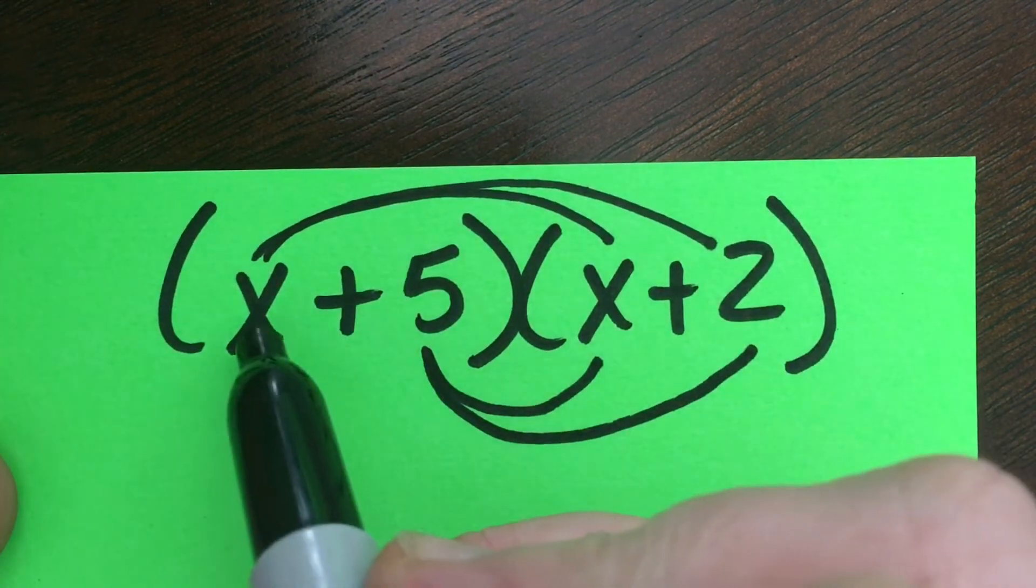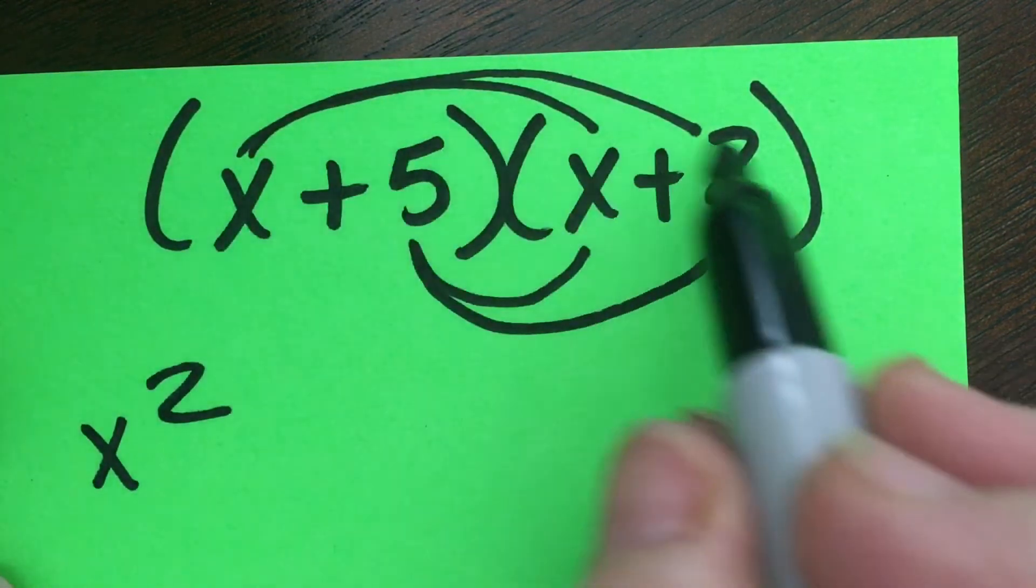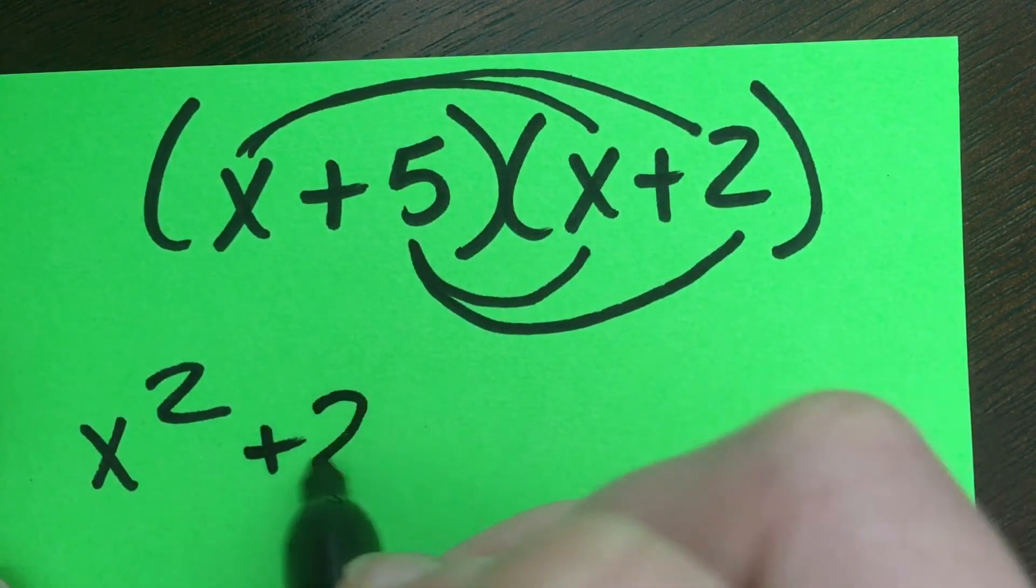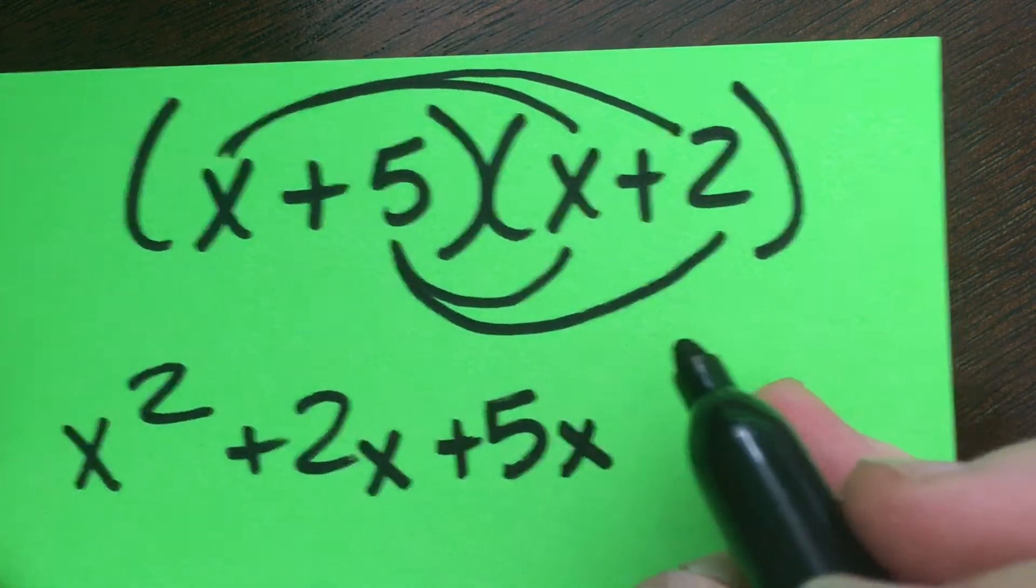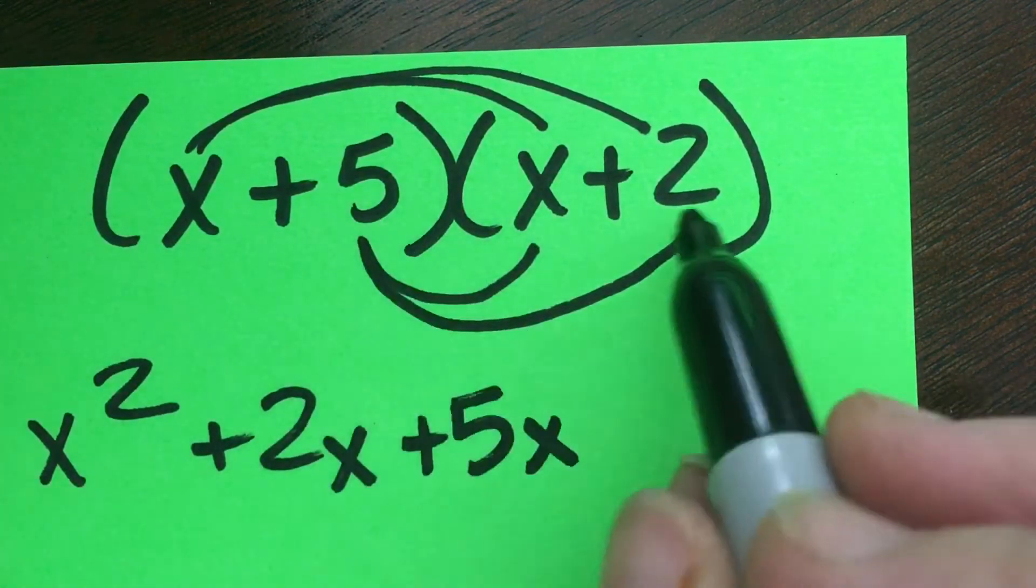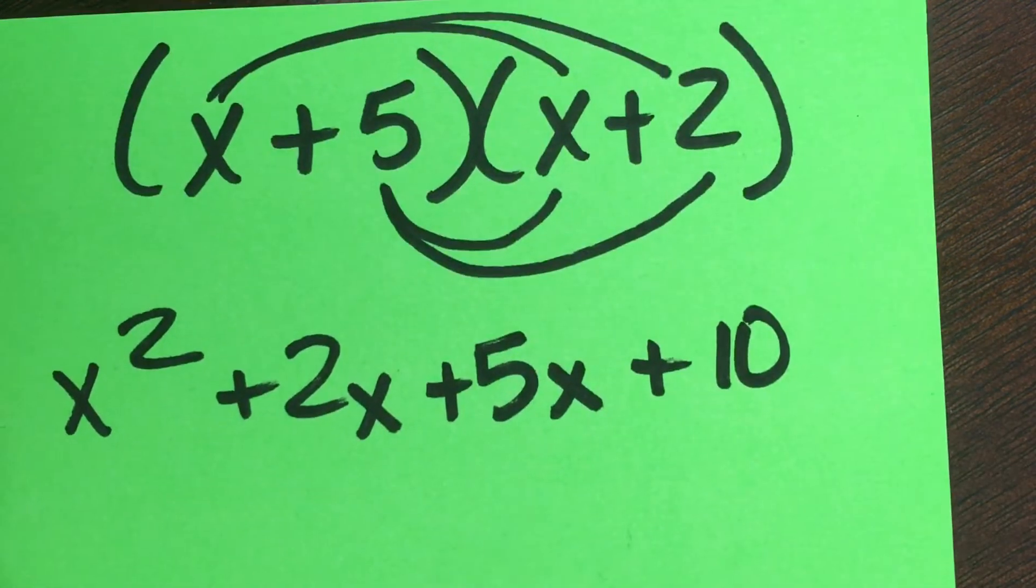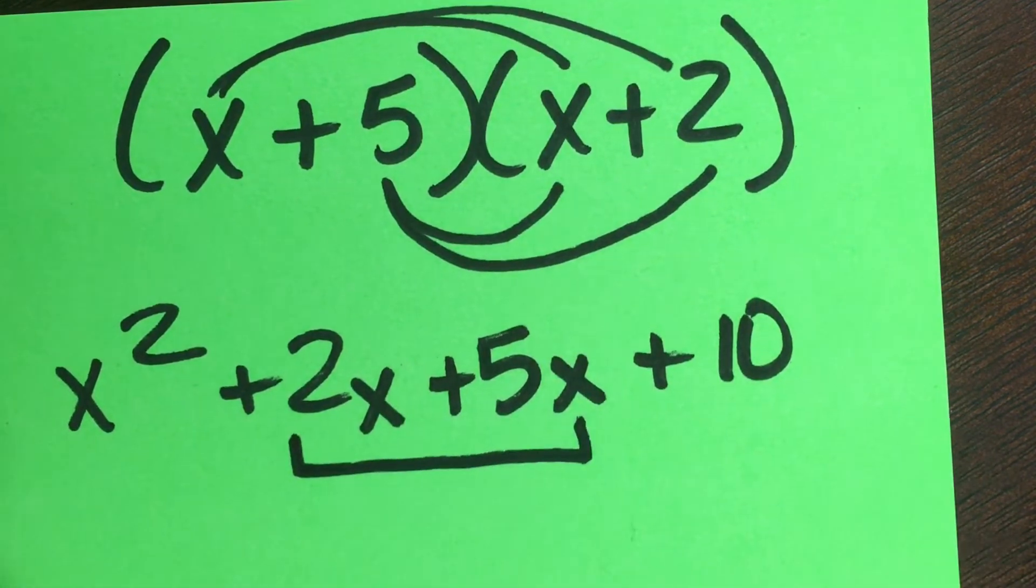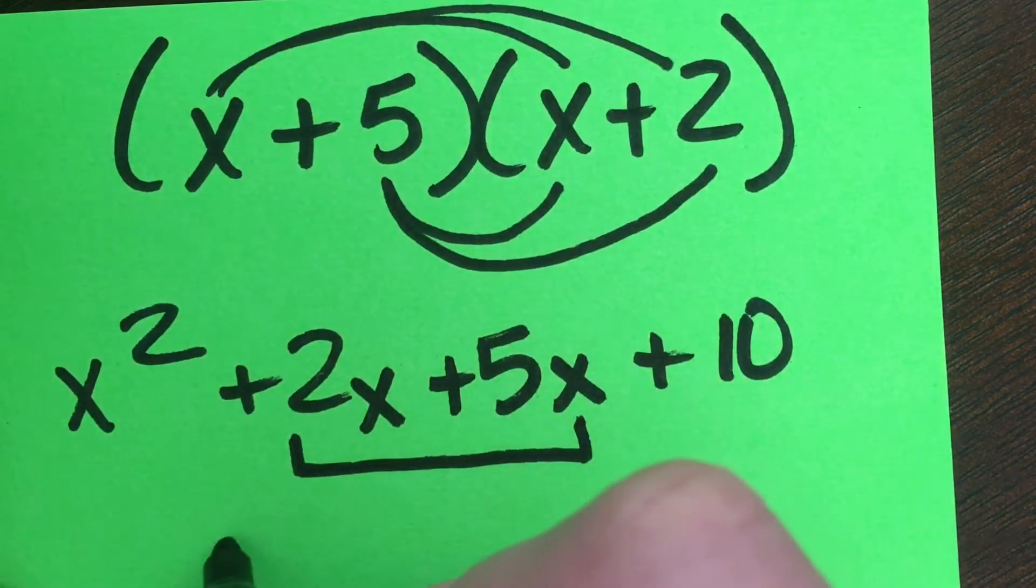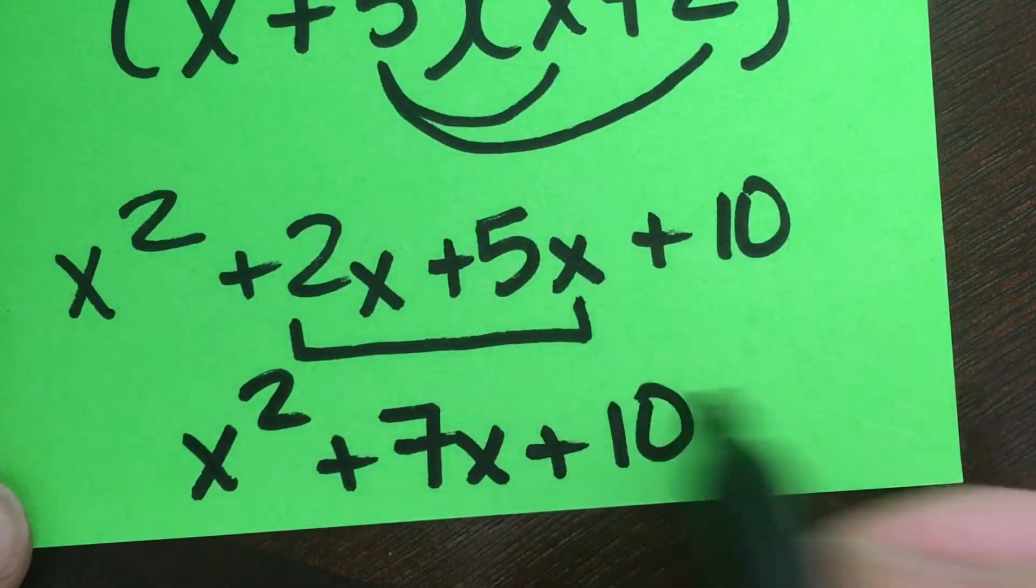We're just making unique combinations. So x times x is x squared. And then x times 2 is a positive 2x. And then 5 times x, they're both positive, also a 5x there. And then 5 times 2 is 10. Another typical process in our work is we scan this for like terms, and it's often that the two middle terms are combinable. And so this becomes x squared plus 7x plus 10.